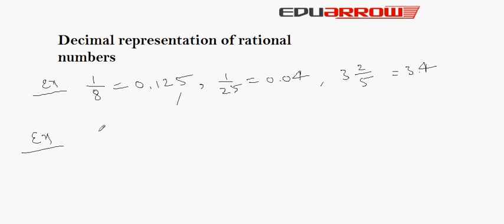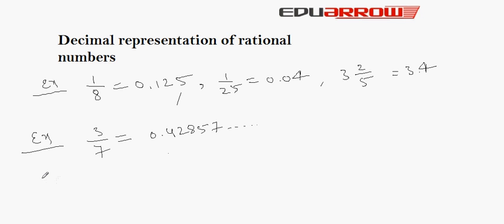Now, examine this example: 3 by 7. That is equal to 0.42857 and will continue. Here we can observe that the division never ends. No matter how long it continues, the quotients of such divisions are called non-terminating decimals. Let us examine another example.